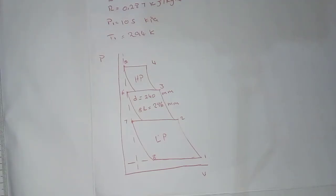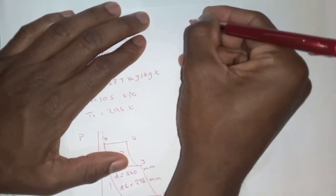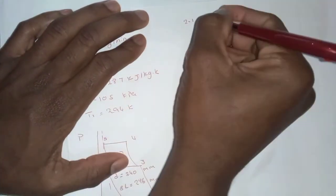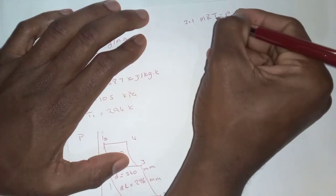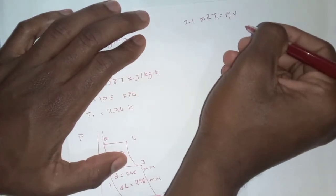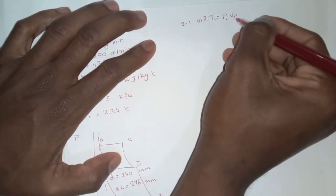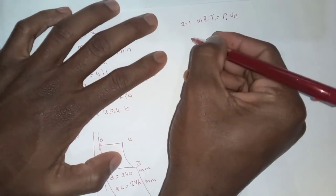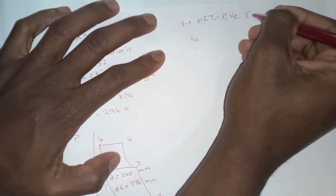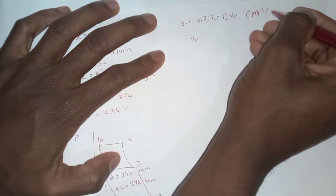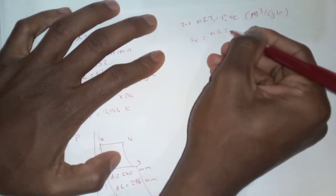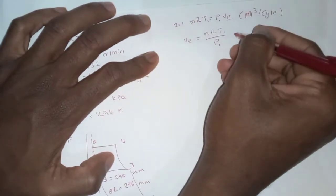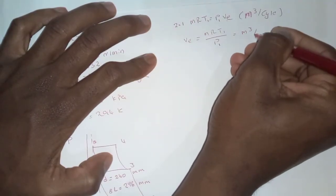For question 2.1 — the volume of air drawn into the low pressure cylinder in cubic meters per cycle — we are going to use MRT equals PV. We will use the information of the first phase since that is what we have. We are looking for the effective volume, so we make V the subject of the formula. We need cubic meters per cycle, so we derive accordingly.